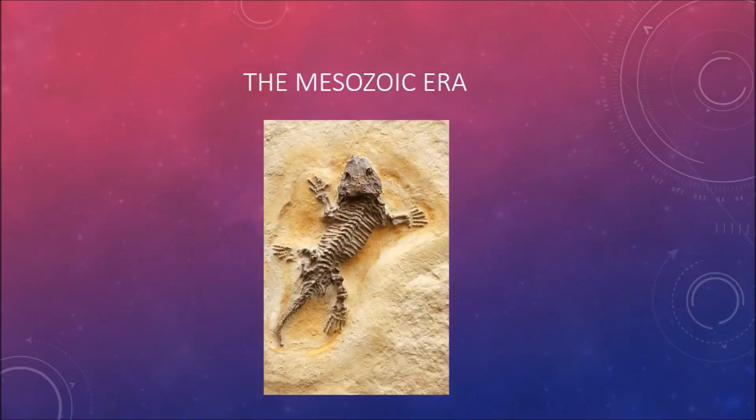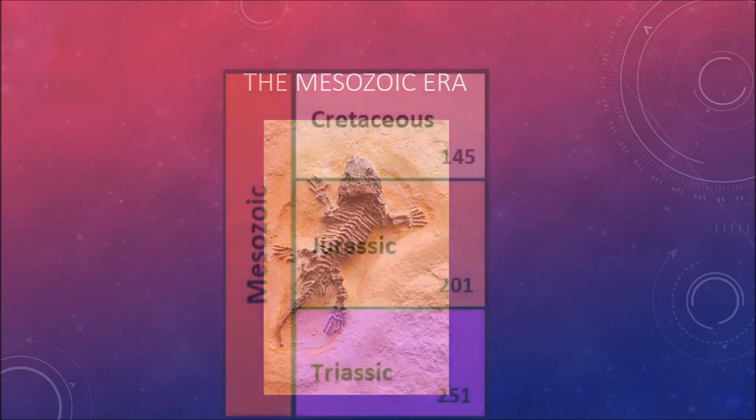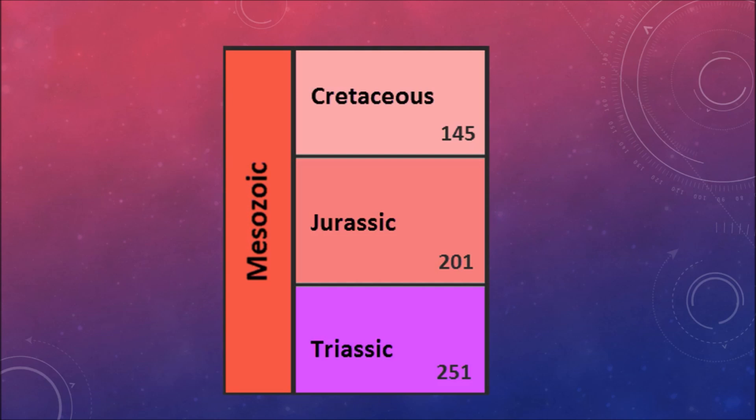After that catastrophe came the Mesozoic era. This chunk of time is often called the Age of Reptiles, because Reptiles were the dominant animals both on land and in the seas. It is divided into three periods, the Triassic, Jurassic and Cretaceous.